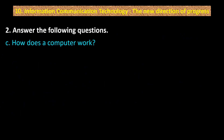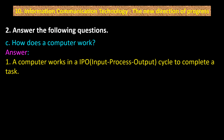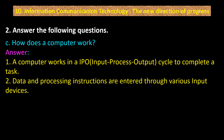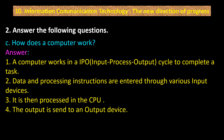Part C: How does a computer work? Answer: Point 1 — a computer works in an IPO cycle to complete a task. Point 2 — data and processing instructions are entered through various input devices. Point 3 — it is then processed in the CPU. Point 4 — the output is sent to an output device.